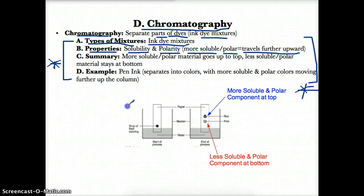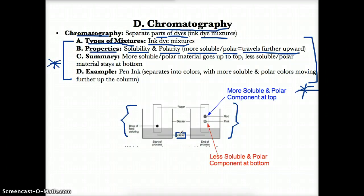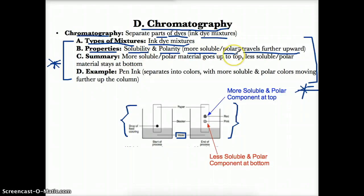Chromatography is set up where you have a piece of paper with the ink blotted on it, and it's put in water usually. It's a paper with ink blotted on it because you want to separate the ink dye mixture, and you put it in water. You separate ink dye mixtures based on solubility and polarity — more soluble or more polar parts of the mixture will travel further up the paper.